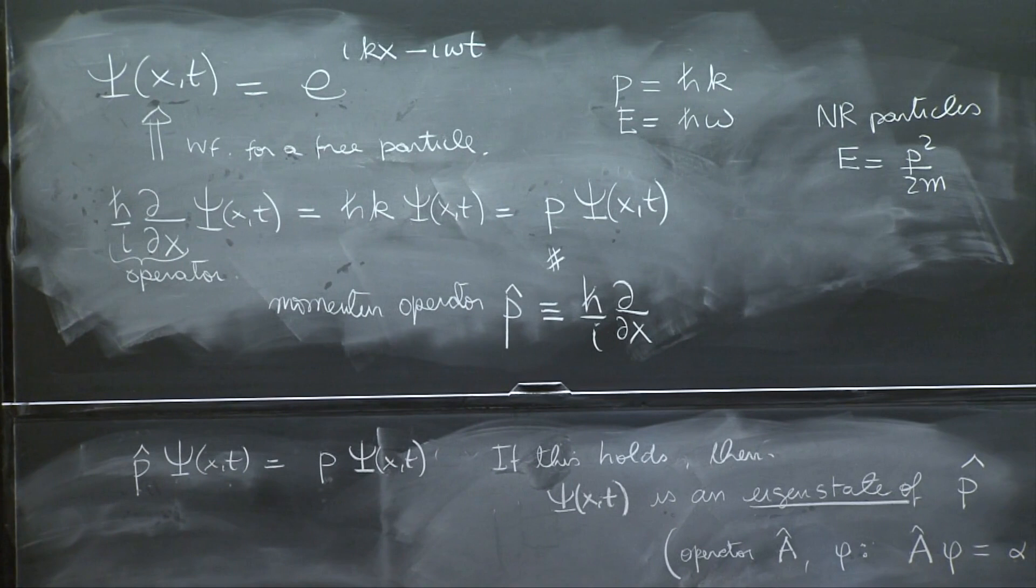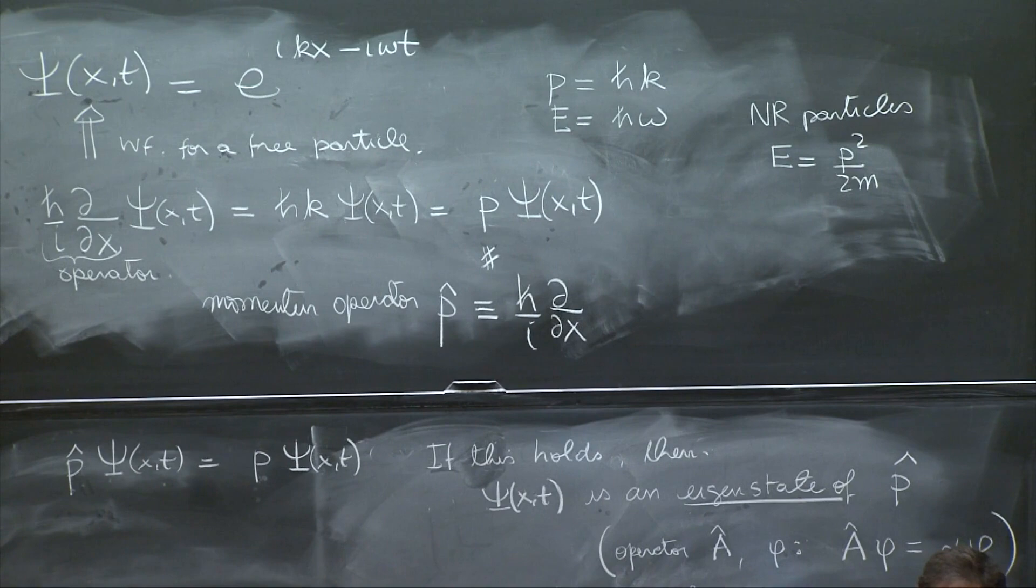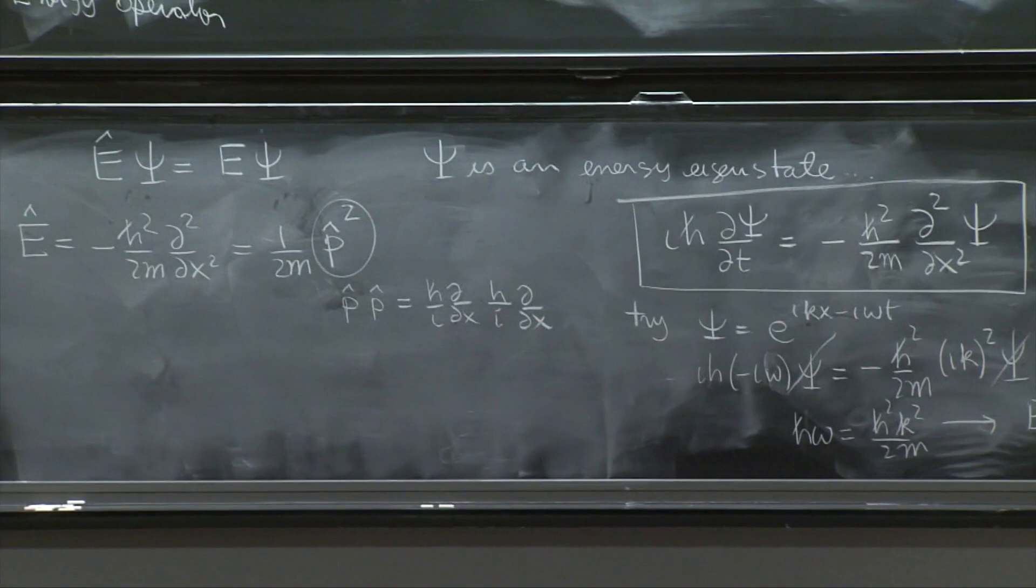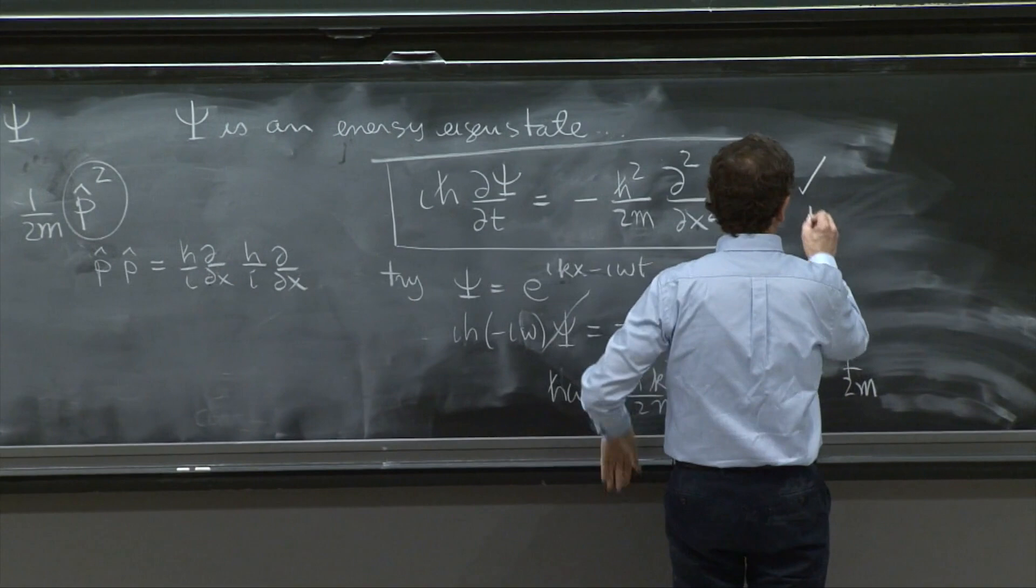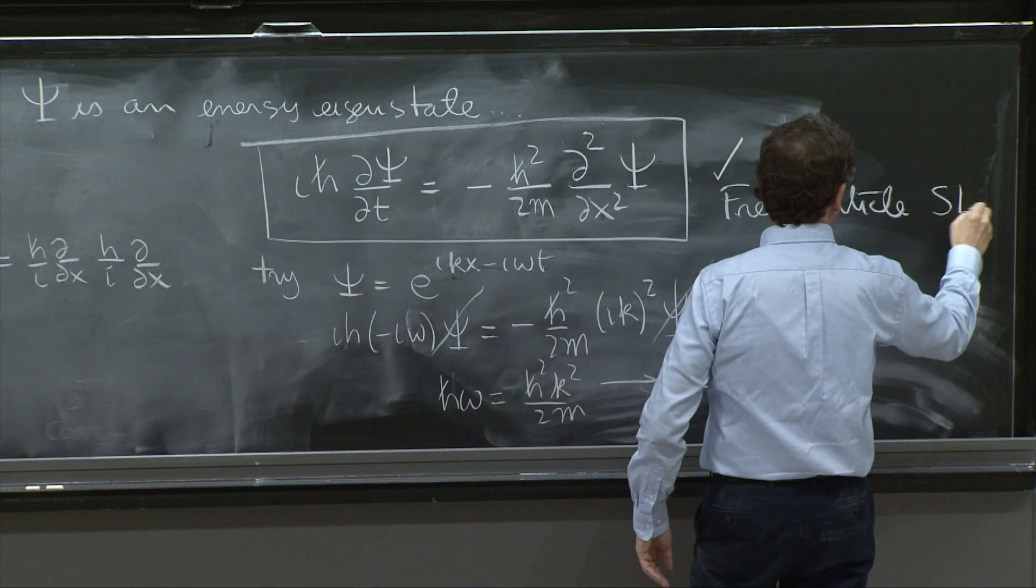is that this equation is linear. Psi appears linearly. So you can form solutions by superposition. So the general solution now is not just this. This is a free particle Schrodinger equation.